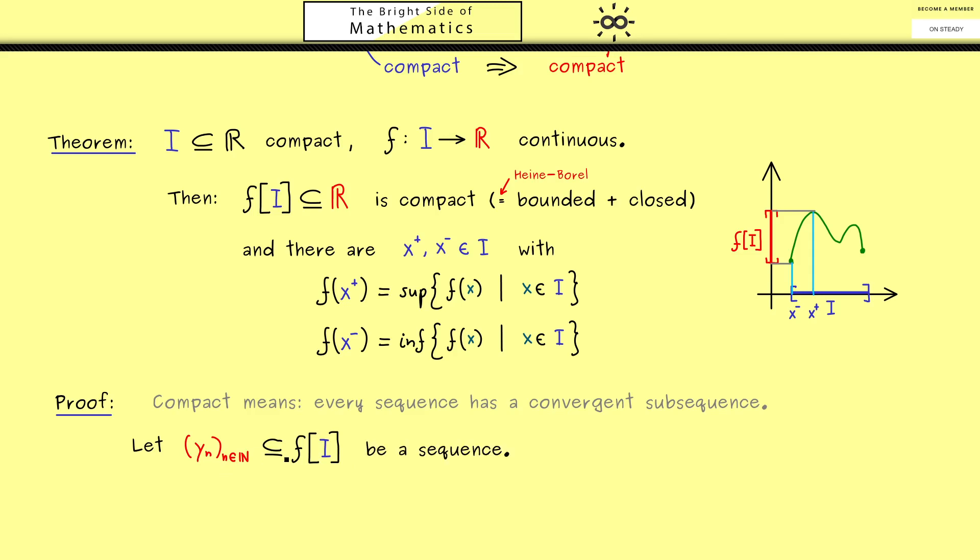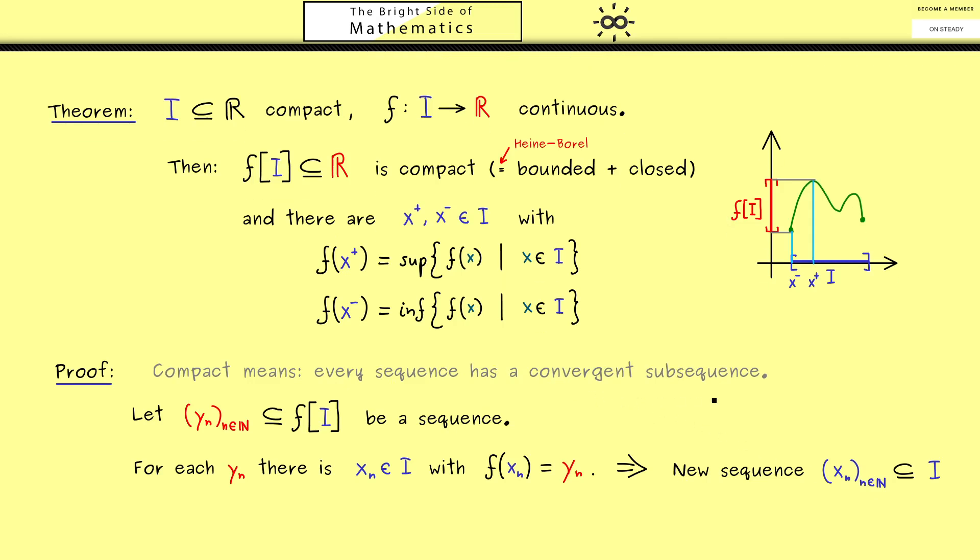Now since yn is in the image we simply know by the definition of a map there is a point xn that is mapped to yn. And of course this whole reasoning here works for all yn, which means we get a new sequence with elements from I. And that is something we can work with because I is compact by assumption.